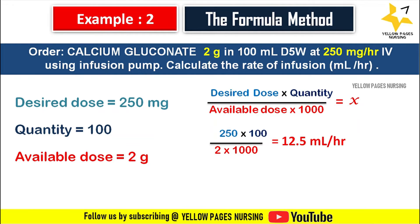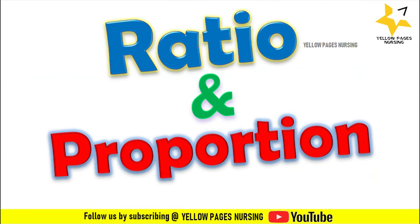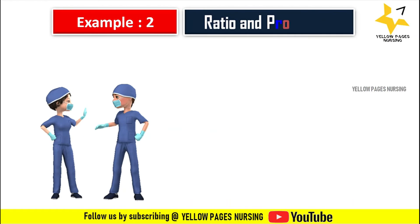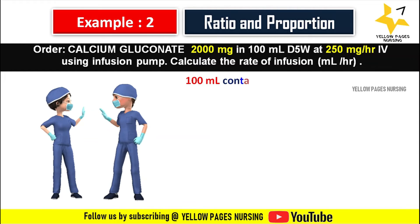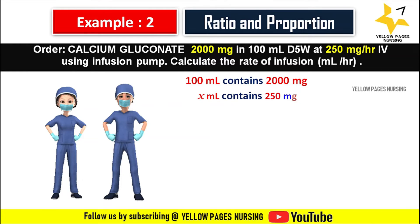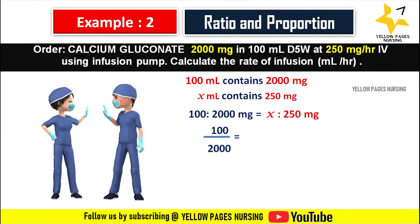Using the ratio and proportion method. The example is calcium gluconate 2000 mg in 100 ml D5 water at 250 mg per hour IV using infusion pump. Calculate the rate of infusion, that is ml per hour. Set up: 100 ml contains 2000 mg; X ml contains 250 mg. So 100 is to 2000 mg equals X is to 250 mg, giving us 100 divided by 2000 equals X divided by 250.